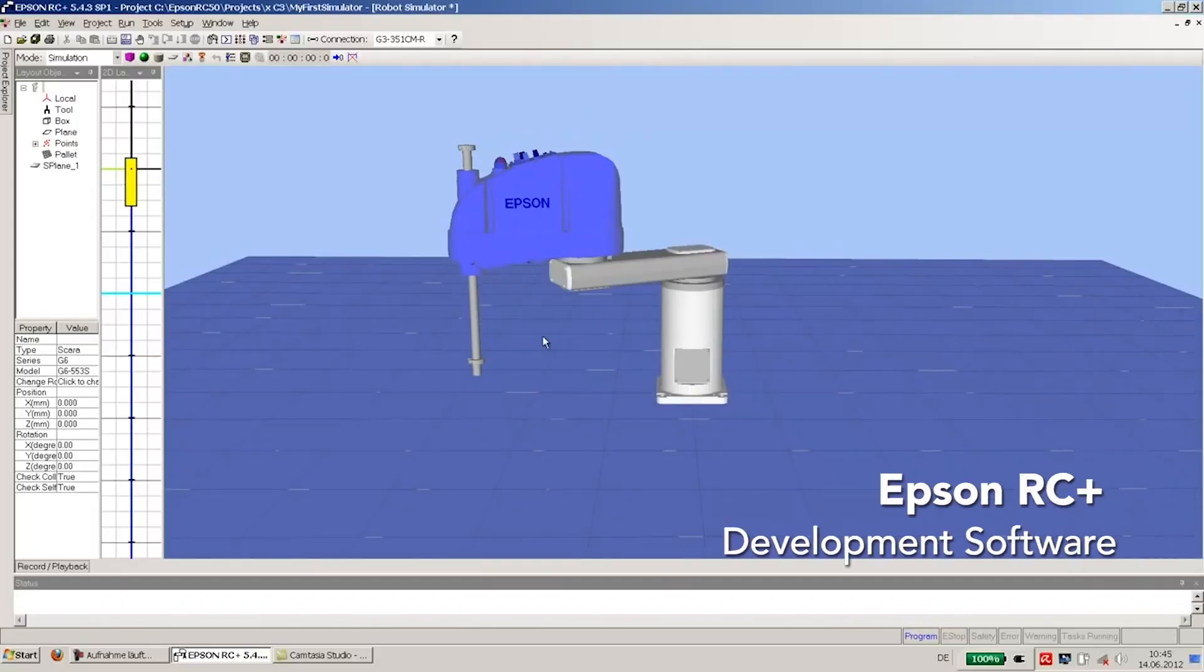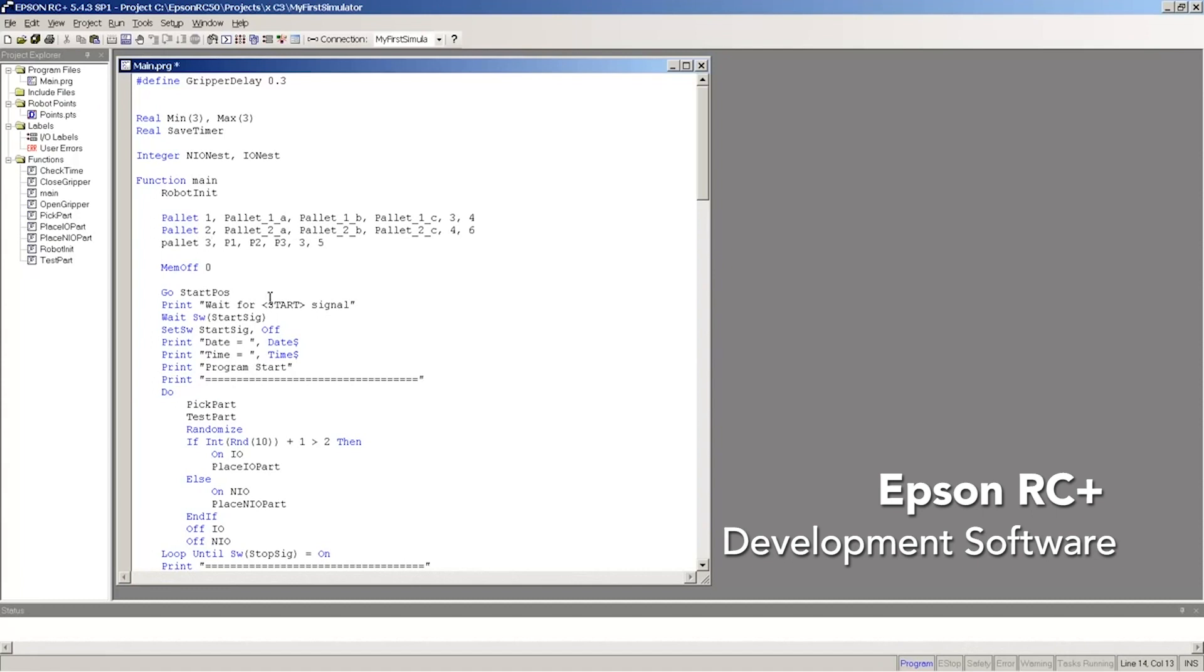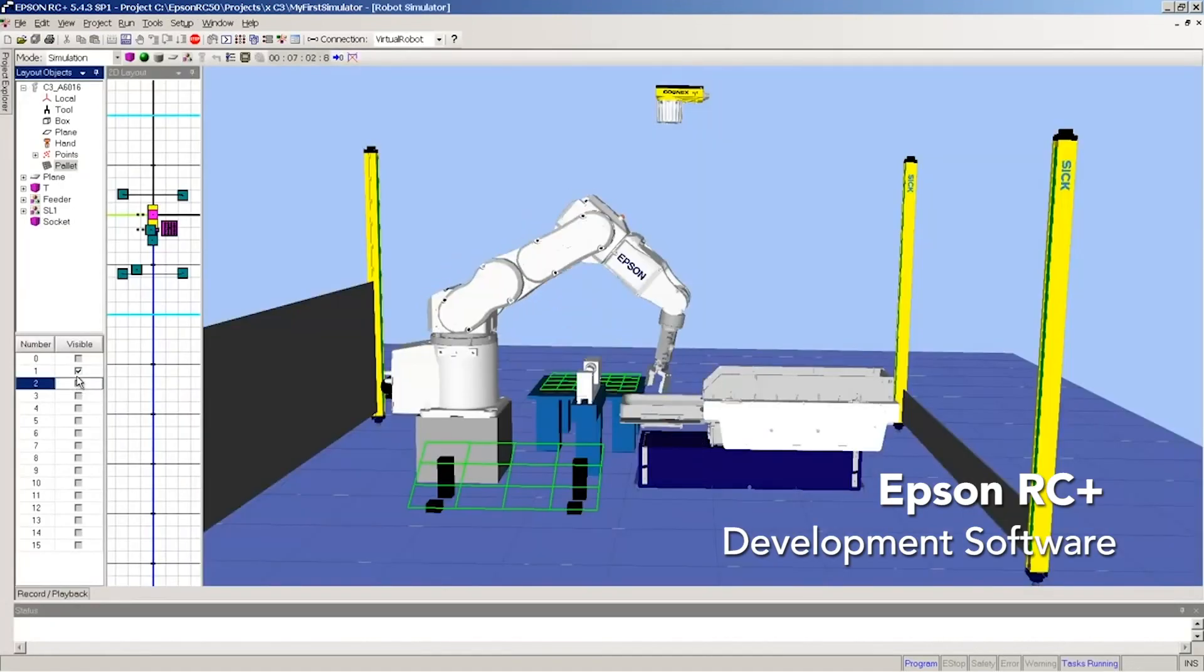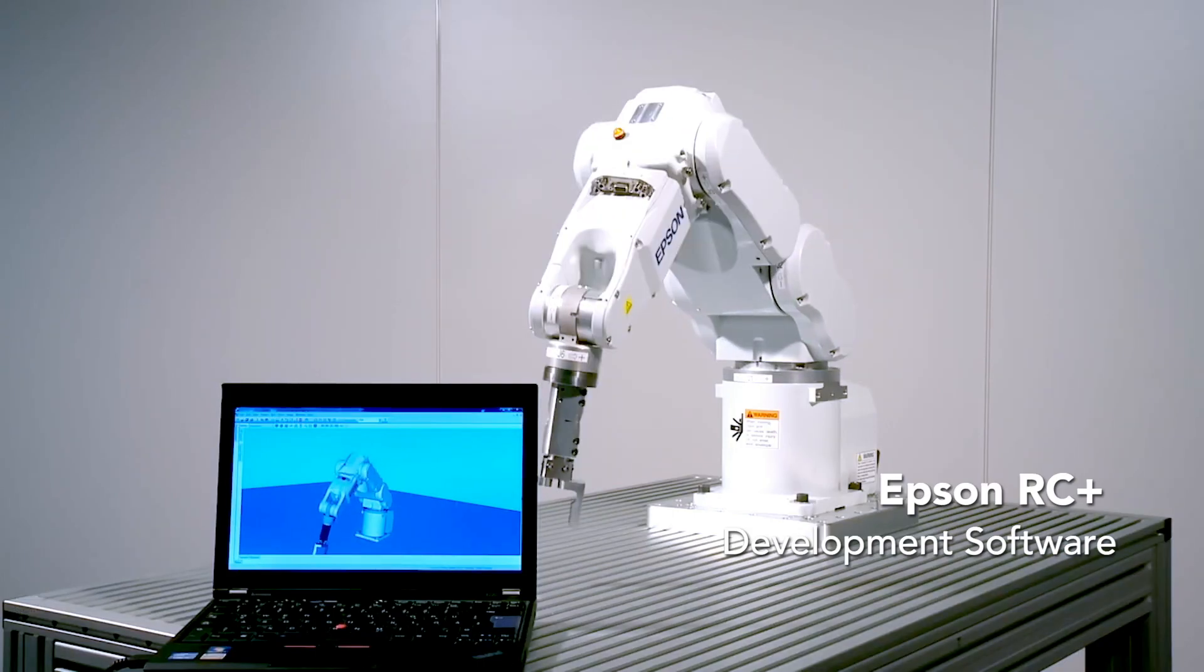This robot line utilizes Epson RC Plus 7 software, which works with all of Epson's other robots and controllers. The benefit here is that if you learn how to program one of our robots in Epson RC Plus 7, then you know how to program them all because all of our robots use Epson RC Plus 7.